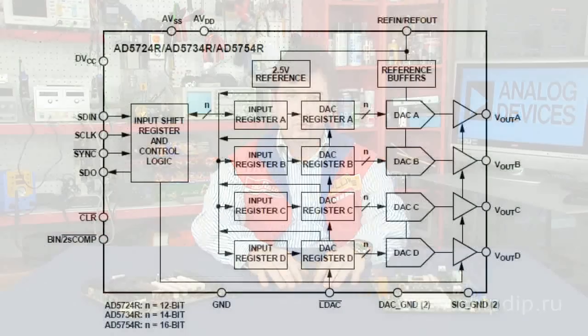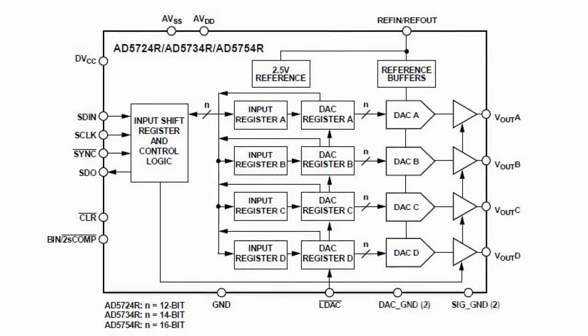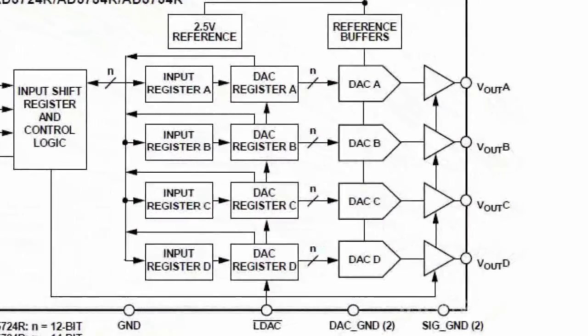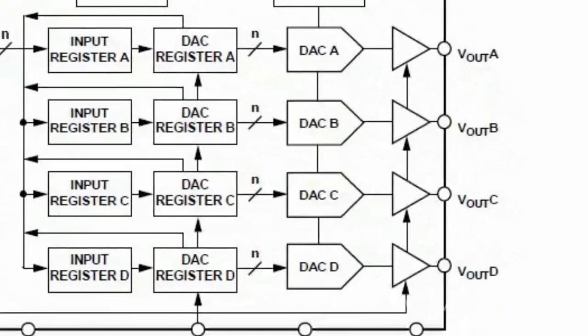The digital-to-analog converter has an interface with a data input frequency of 30 MHz. Setup starts on powering up. It has an option of offline switching to sleep mode for each channel. The converter provides the instrument functions of loading LDAC and clearing CLR the data register.